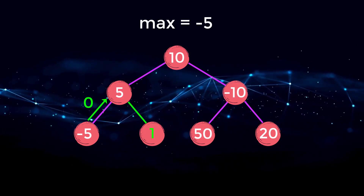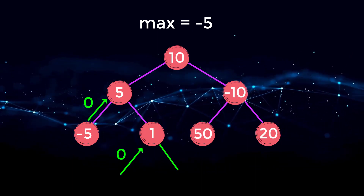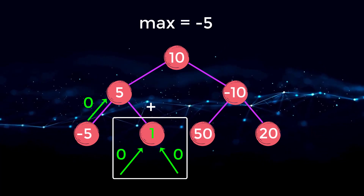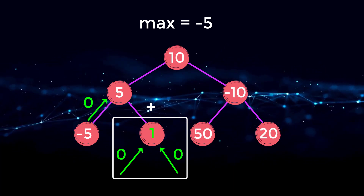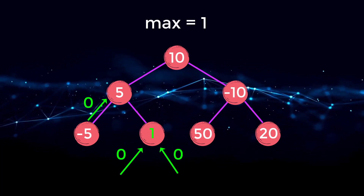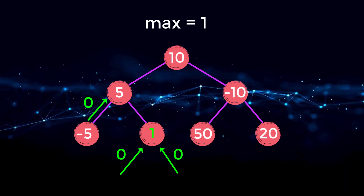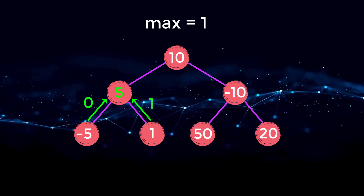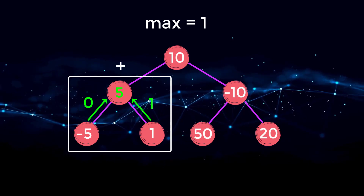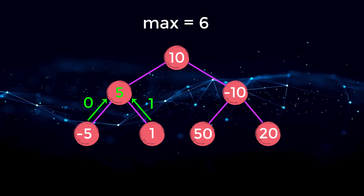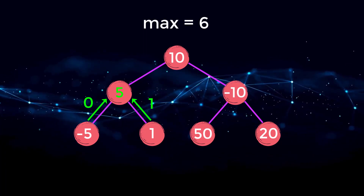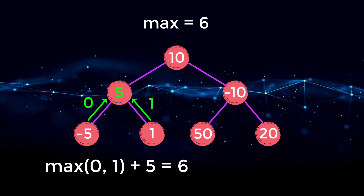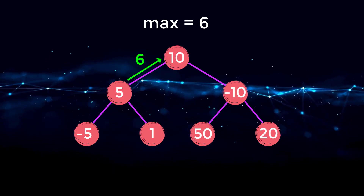Now we go right from node five, then go left — which is null, so we return zero — then right, which is null, so we return zero again. We compute the new max at node one: zero plus zero plus one equals one, and that is greater than our current maximum. We then compute what to return to node five: we take the max between the left and right side, which is zero, and add it to the current value of one, so we return one to node five. At node five, we compute the new maximum: zero plus one plus five equals six, and that is greater than our current max. We then choose the max between the left child sum (zero) and right child sum (one), plus five, and return six to node 10.